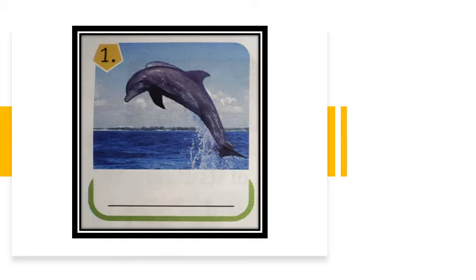We can see the first picture. The first picture is of a Dolphin and the spelling of Dolphin is D-O-L-P-H-I-N. Dolphin.